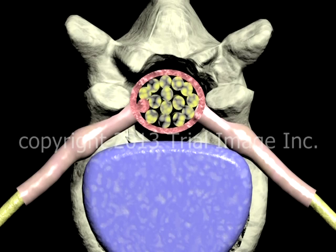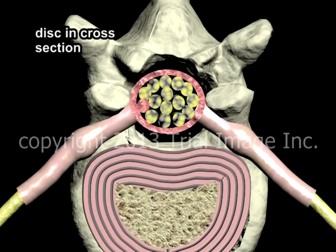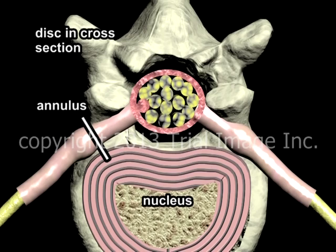An examination of the inner structure of the disc makes it easier to see how age-related degeneration or trauma may result in disc bulge. Seen in cross-section, the disc is composed of two primary structures: the annulus, a tough fibrous outer shell, and the nucleus, a softer inner core. The annulus gives the disc its strength, while the nucleus provides flexibility and cushioning.